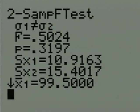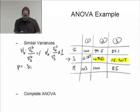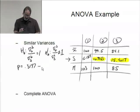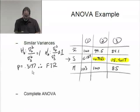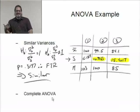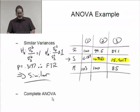Coming back to my computer, I'm going to write down p-value equals 0.3197. Therefore, fail to reject, which implies similar.